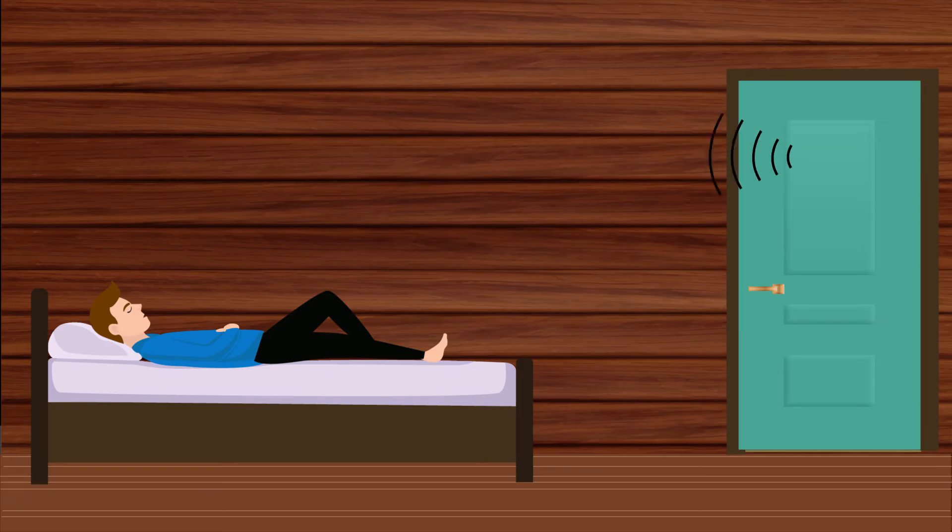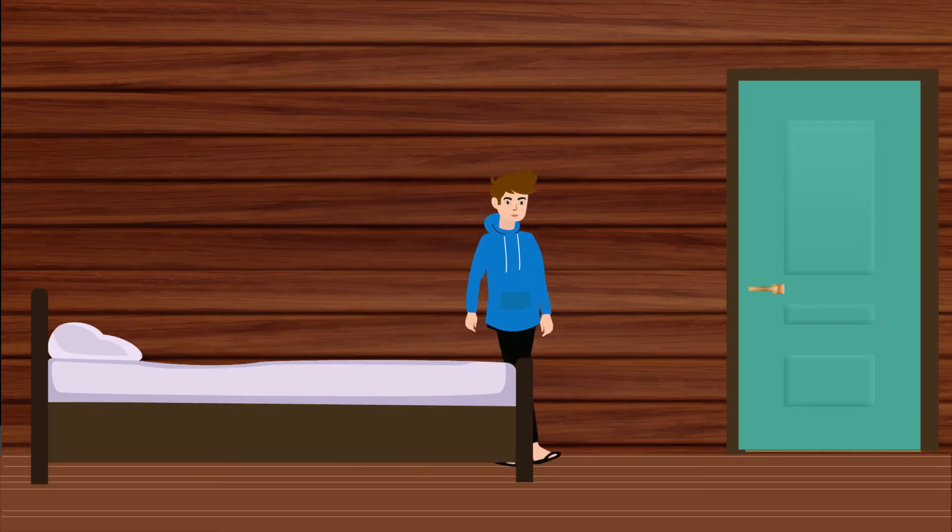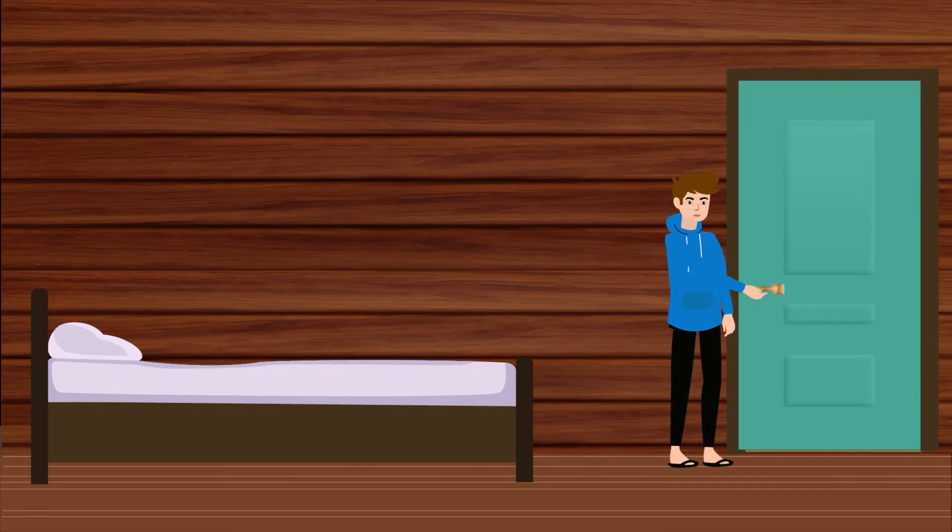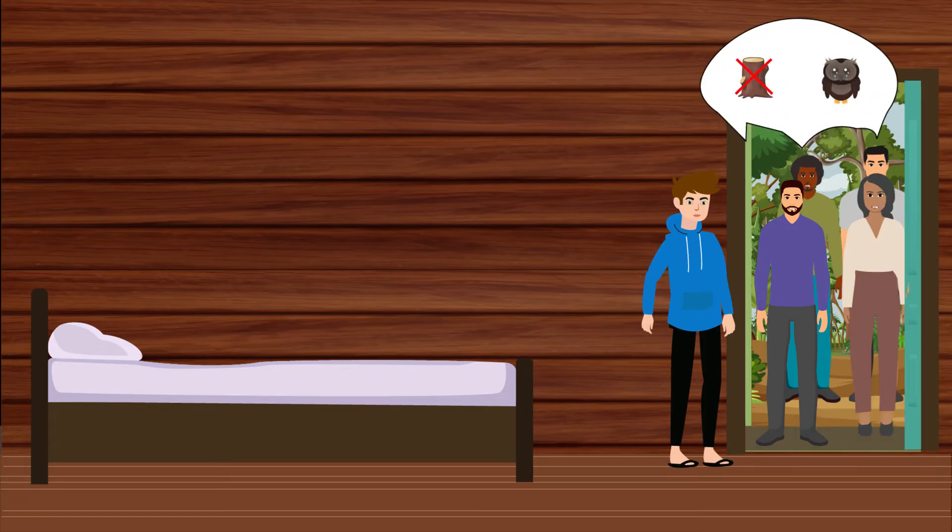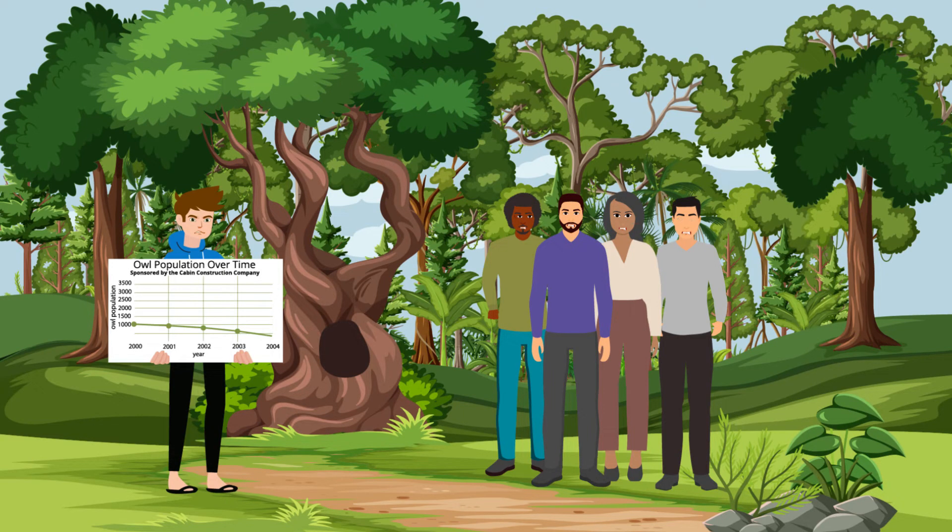However, the next day, you wake up to a ruckus. Exiting your new cabin, you face a crowd of protesters. They claim that you shouldn't have cut down the trees and that you've hurt the owls. Confused, you show them the graph from yesterday.